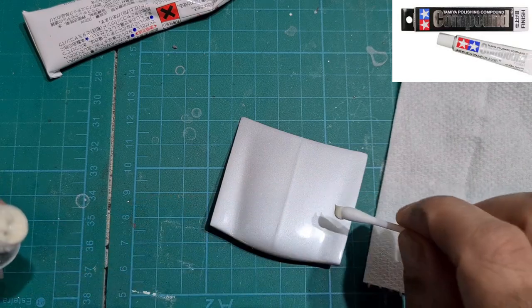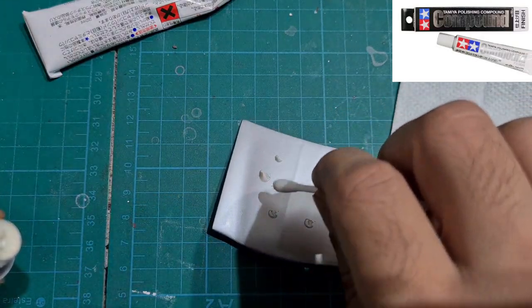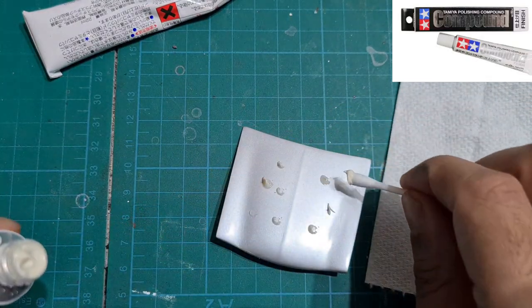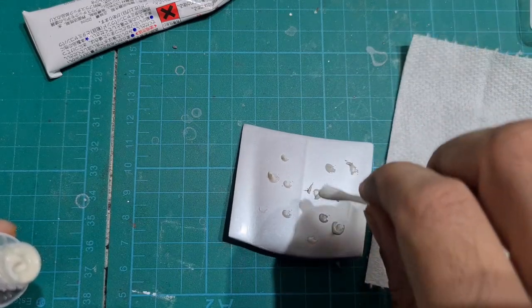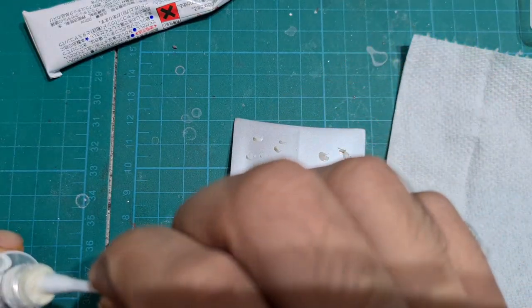Lastly we're going to apply Tamiya's Polishing Compound Finish the same way we applied the previous two. After this one we're going to see quite a lot of shine as you'll see.